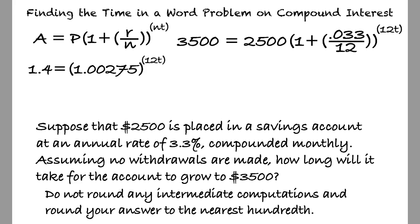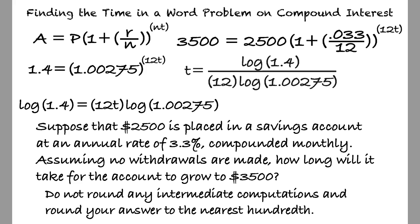Next, we take the common logarithm of both sides yielding log of 1.4 equals 12t times the log of 1.00275. And then by further isolating t, the equation will read t equals log of 1.4 divided by 12 times the log of 1.00275,